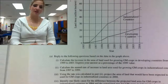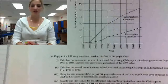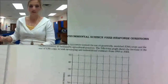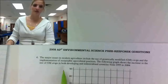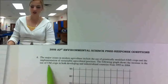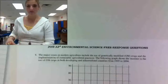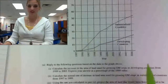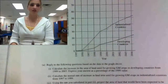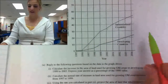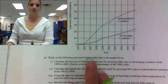I'm going to take a second to work out the 2009 number four release exam question. If I look at the actual question, it is telling me that I have a graph showing GM crops — that means genetically modified. I have developing countries and industrialized countries, and I'm going to be analyzing these numbers to answer the questions.